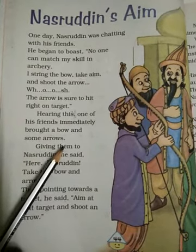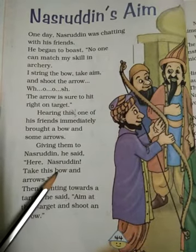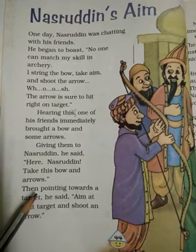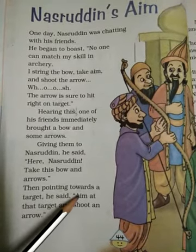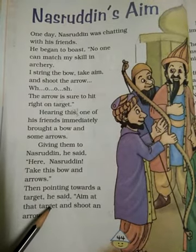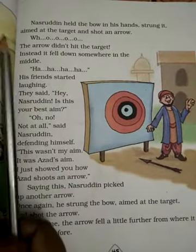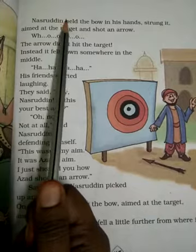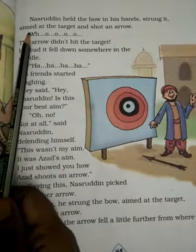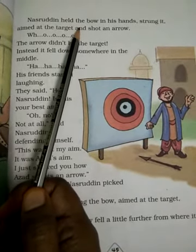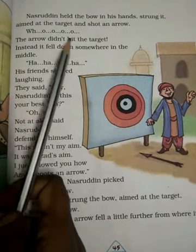Giving them to Nasruddin, he said, here Nasruddin, take this bow and arrows. Then, pointing towards a target, he said, aim at that target and shoot an arrow. Nasruddin held the bow and arrow. Whoosh! The arrow didn't hit the target.